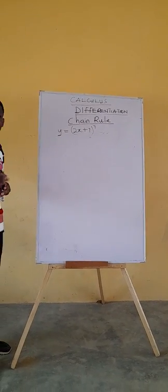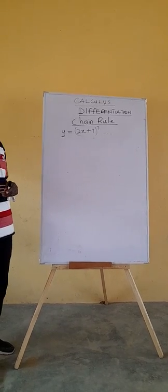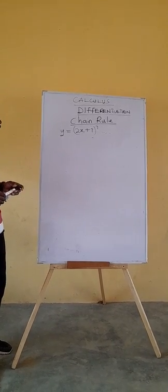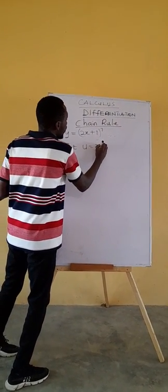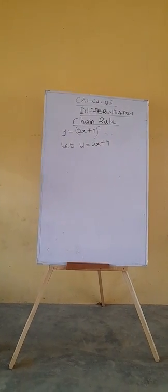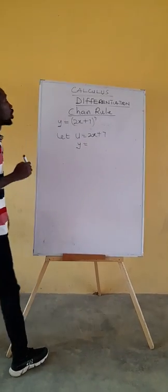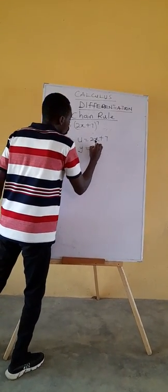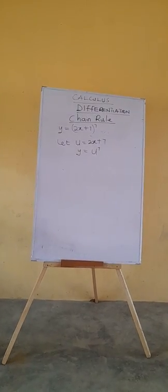Let u equal to the base. And what is the base in this case? 2x + 7, you are right. So let u equal to 2x + 7. Then our equation can be rewritten as y equals u^7. Now what do we do?